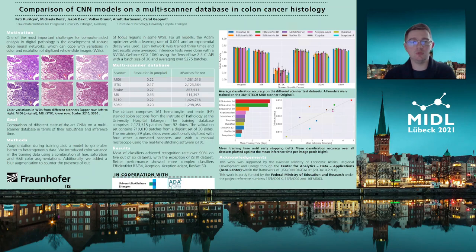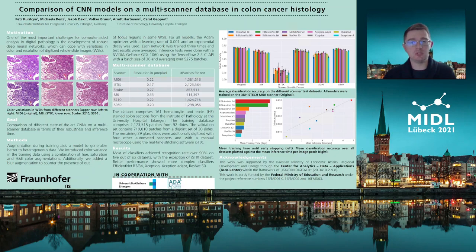The dataset used for the baseline cartography network comprises 161 hematoxylin and eosin stained colon sections from the Institute of Pathology at the University Hospital Erlangen. All samples were digitized with a 3D Histech MIDI scanner at 20x magnification and 0.22 micrometers per pixel resolution, and annotated manually by accurately outlining the contours of seven different tissue classes: tumor, necrosis, inflammation, connective tissue, muscle tissue, mucosa, and mucus. Based on the annotated whole slides, labeled non-overlapping patches of 224 by 224 pixels are generated. The database comprises over 2 million labeled image patches for training and over 700,000 patches for validation.